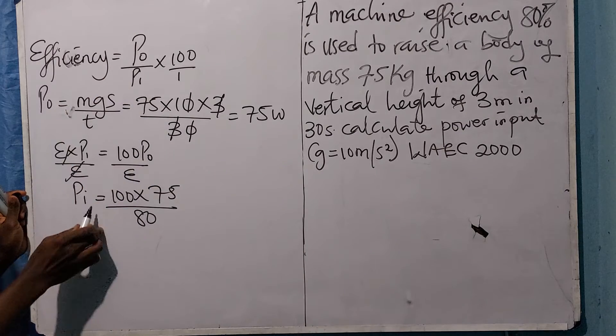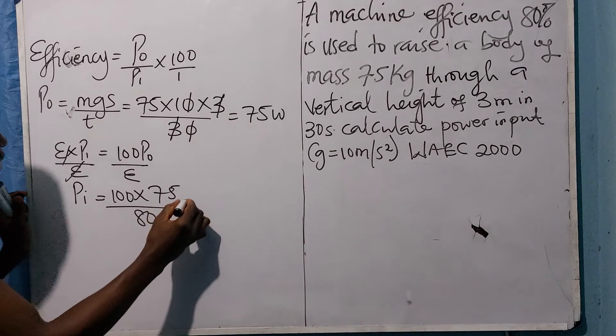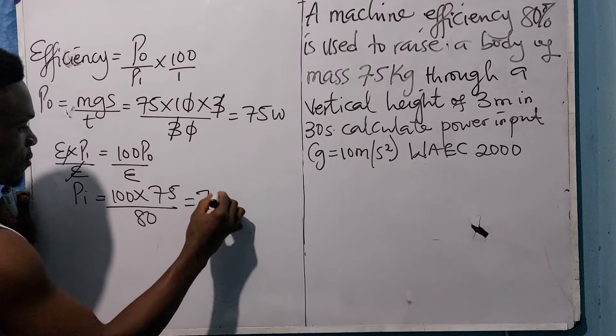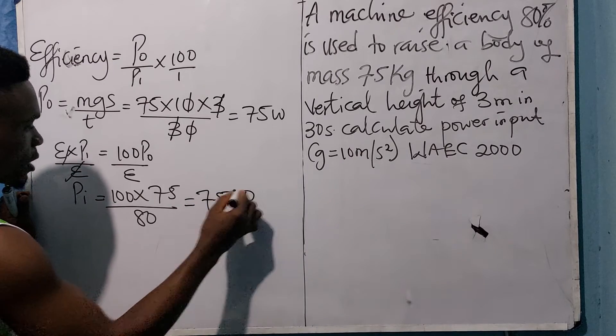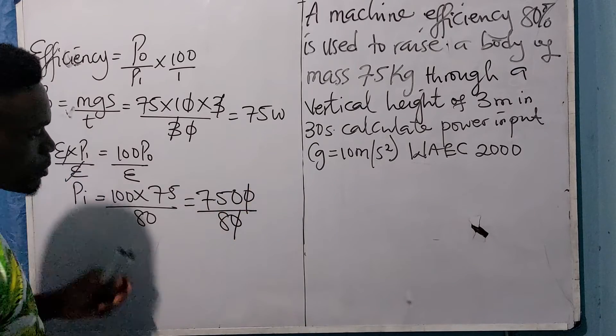In doing this, you now have 7,500 divided by 80. Let me use my calculator, please.